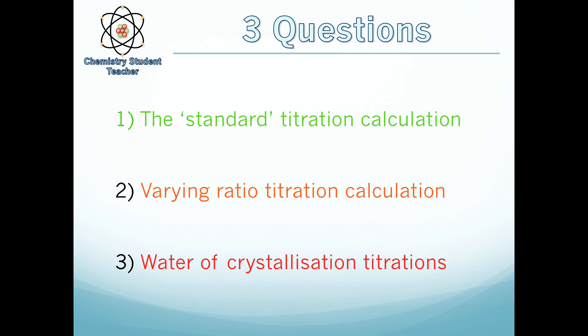The second question is a bit more difficult but very similar. You're looking at different ratios of reactants. You meet this more in A2 but also some of the high level AS questions. The third one: water of crystallization. You can use titrations to work this out. Like I said, I'll take you through all three of these and how to do them.